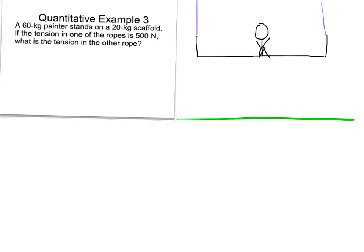So, our scaffold itself has a mass of 20 kg. So mass, and I'll use S for scaffold, MS is just the mass of the scaffold, is 20 kg. And our painter dude, MP, his mass is 60 kg.